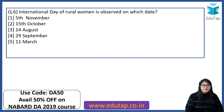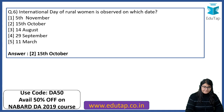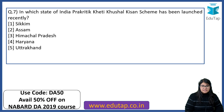International Day of Rural Women is observed on which date? The correct answer is it is observed on the 15th of October. Next: in which state of India has the Prakritic Kheti Kushal Kisan scheme been launched recently? The answer is Himachal Pradesh.